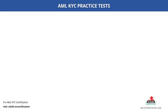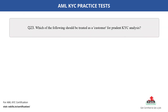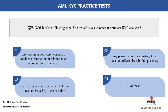Question number 23. Which of the following should be treated as a customer for prudent KYC analysis? The options are: A. Any person or company which can conduct a transaction in relation to an account offered by a bank; B. Any person who is a signatory to an account offered by a building society; C. Any person or company which holds an account issued by a credit union; D. All of these. The correct answer is option D.